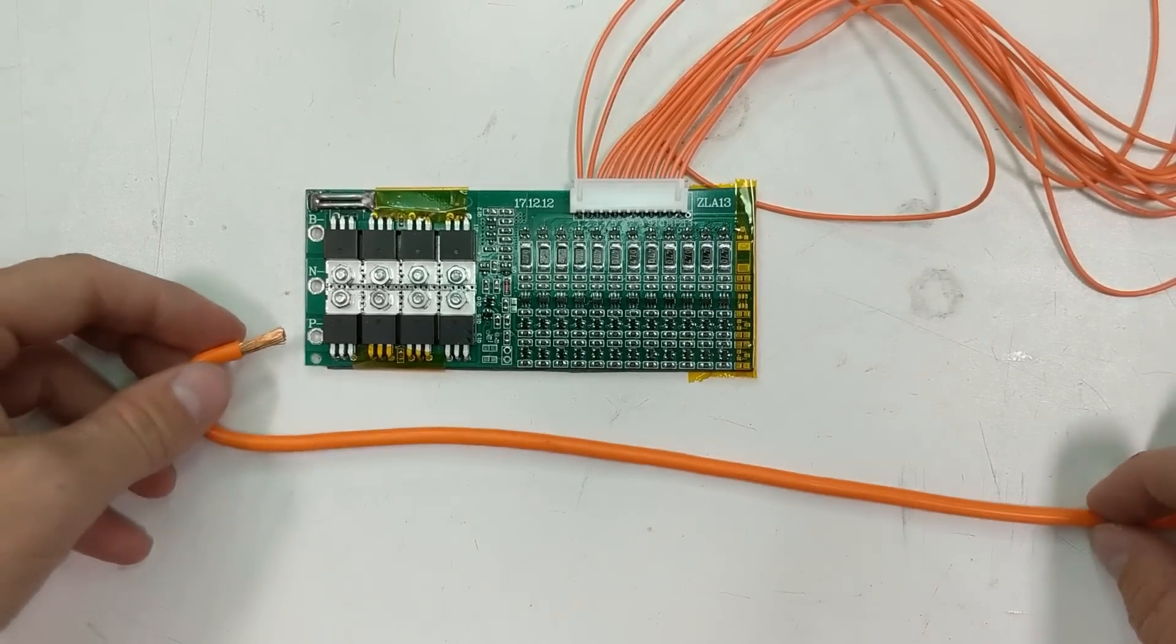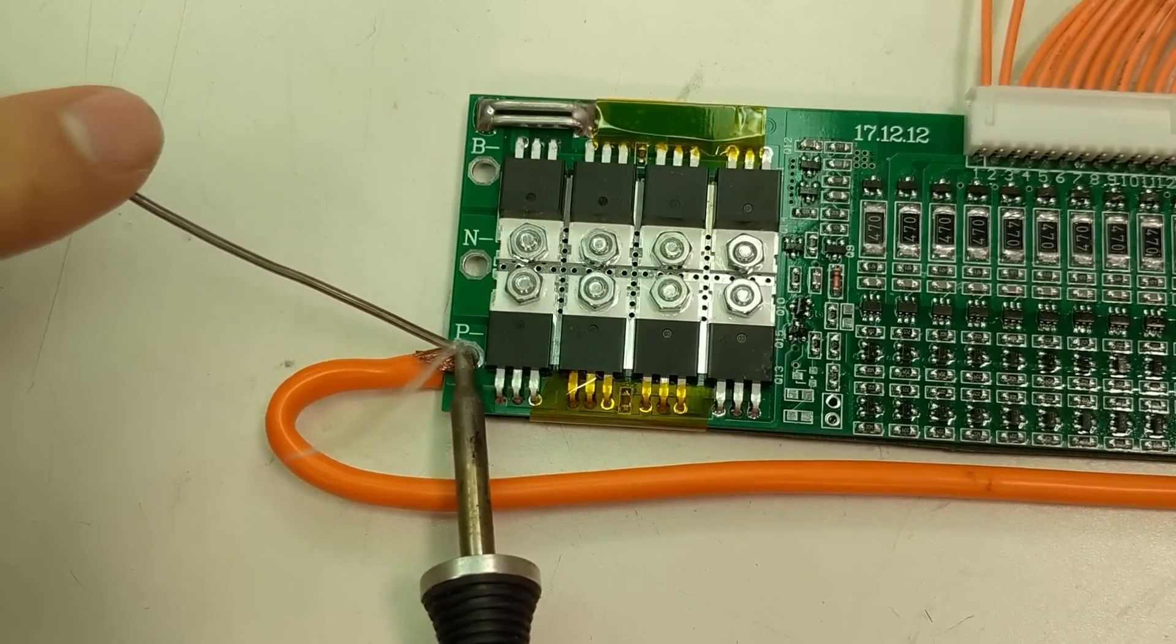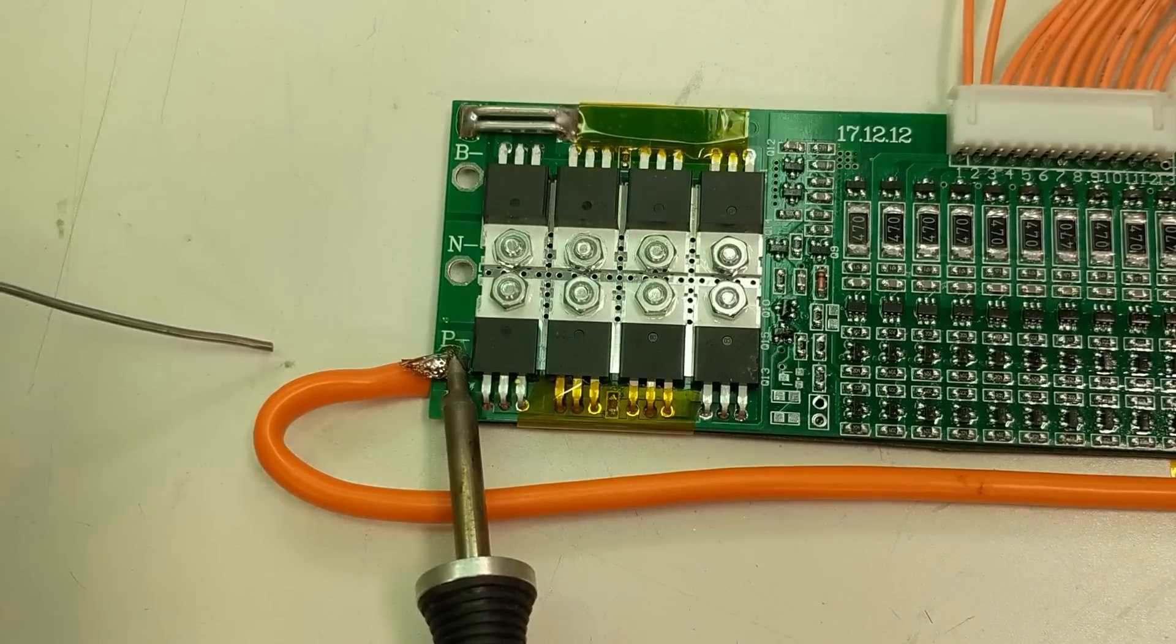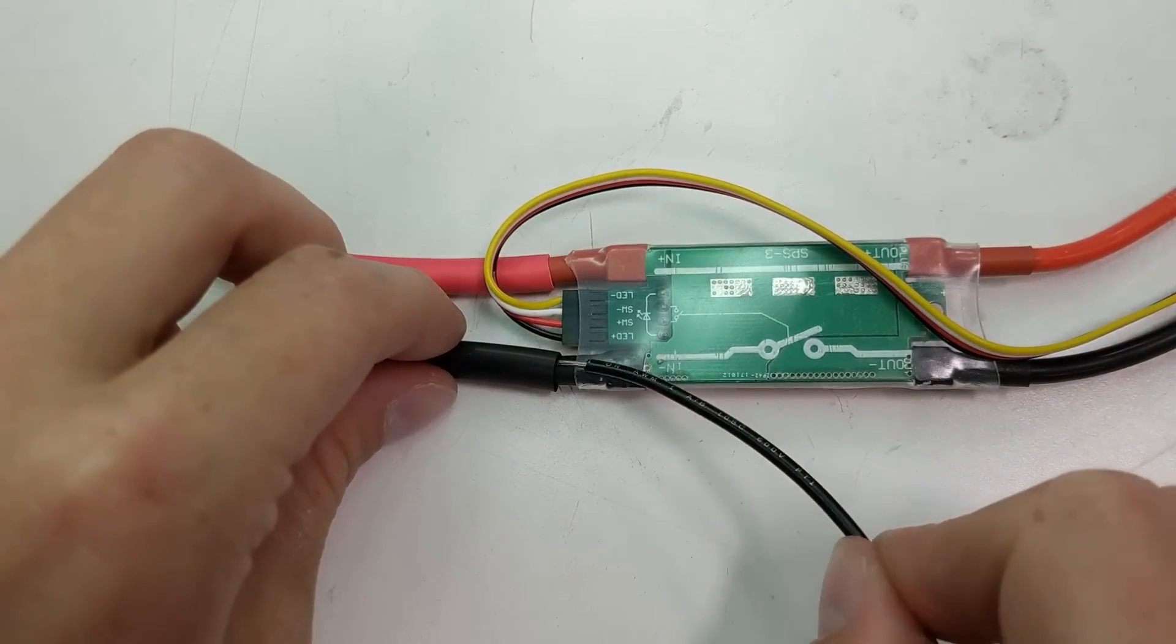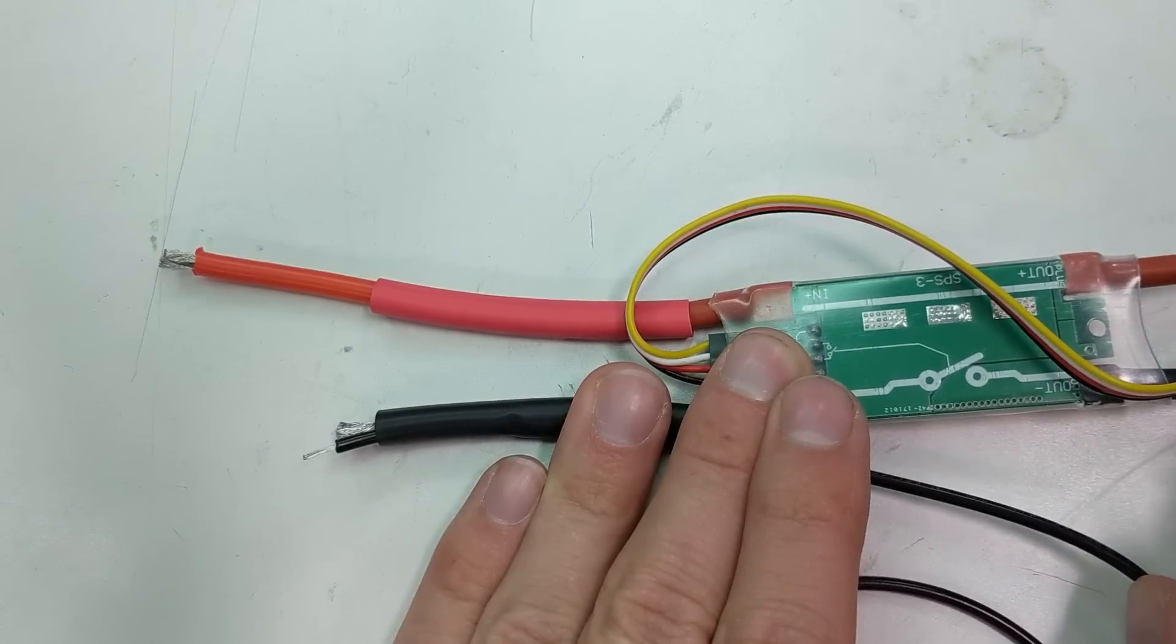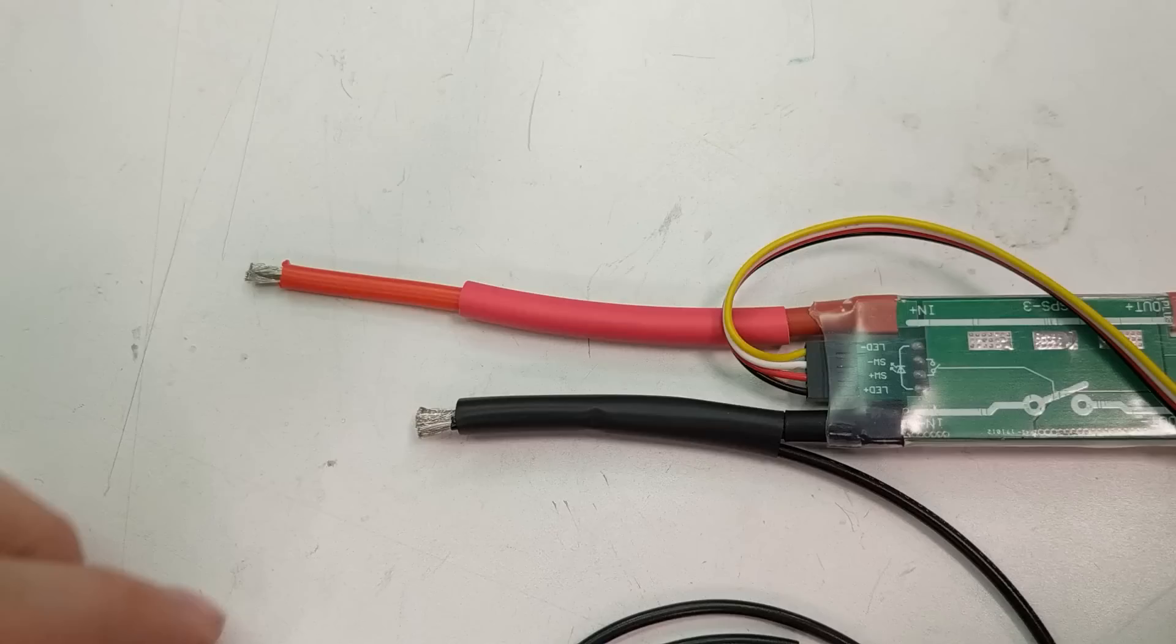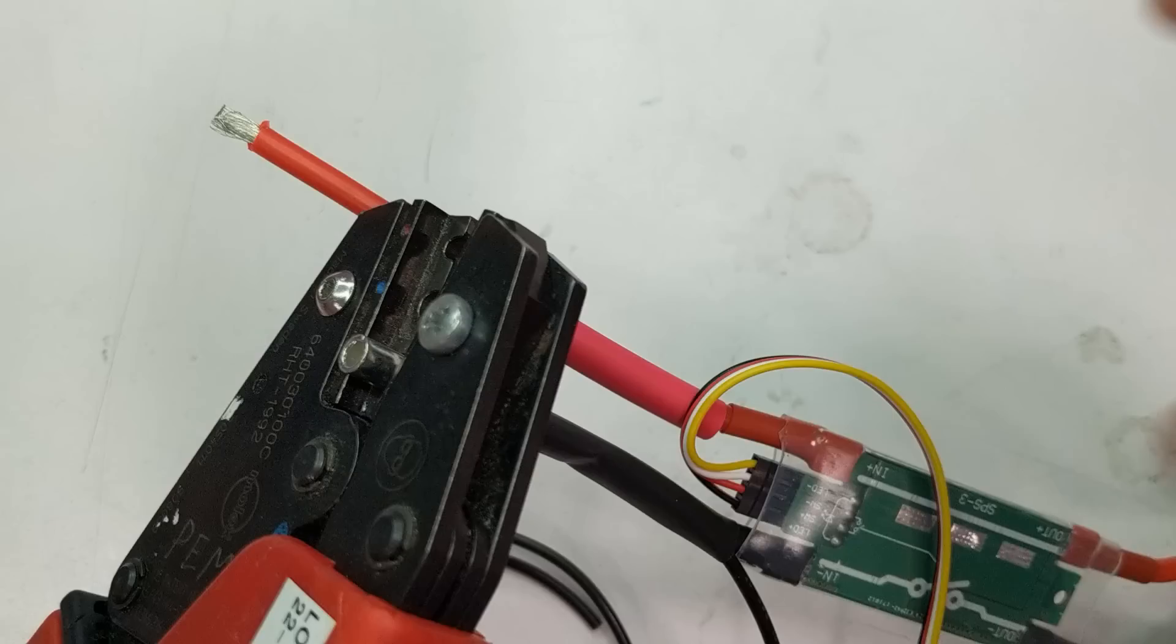Solder up the battery output connection to the battery management system. The BMS makes sure that the cells are charged properly and not damaged during regular use. In line to the final output of the battery, connect up in serial the electronic switch. This lets you turn the battery pack on and off.